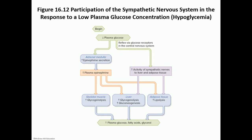What is the effect of the sympathetic nervous system on hypoglycemia? When plasma glucose levels go down, that is a stressful situation for the body. This stimulates the adrenal medulla to make epinephrine, and also stimulates the sympathetic nervous system through nerves directly innervating the liver and adipose tissue. Both plasma epinephrine and sympathetic nerve stimulation lead to increased glycogen breakdown in skeletal muscles and the liver, plus increased gluconeogenesis in the liver and increased lipolysis in adipose tissue — all leading to increased plasma glucose, fatty acids, and glycerol.